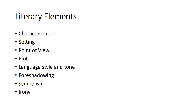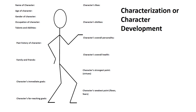The literary elements we'll look at to help us understand the theme are characterization, setting, point of view, plot, language, style, and tone — all of that is one element — foreshadowing, symbolism, and irony. Chapter six talks about these more in depth, so I'm going to go on and talk about those.